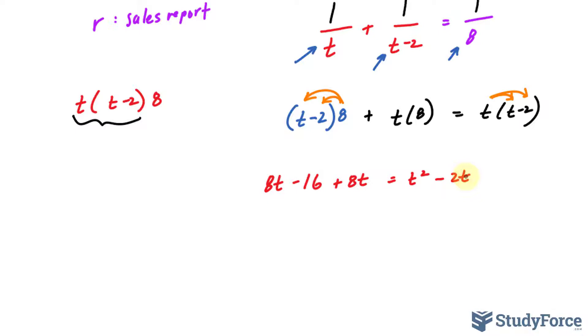I'll bring all the terms to one side making one of the sides equal to zero. So I'll take that over and take that over. Eight plus eight is sixteen plus two, once you bring it over, is 18t. Bringing that gives us negative t squared and we still have that minus 16 is equal to zero.